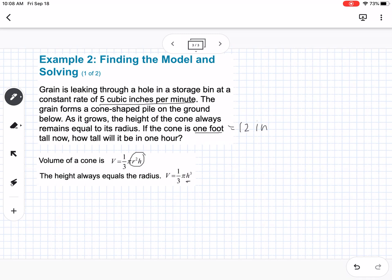Okay, so we're going to start by saying our volume is equal to 1/3rd pi times 12 cubed. And that would be 576 pi inches cubed.